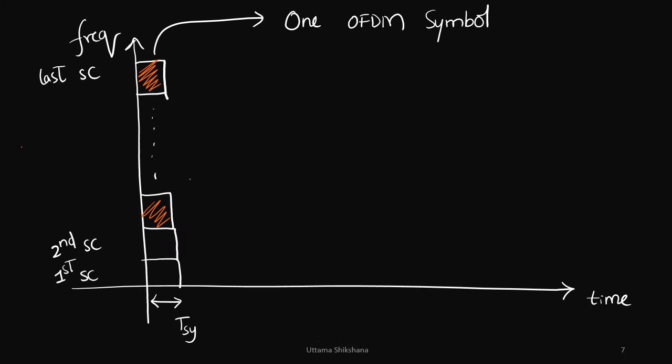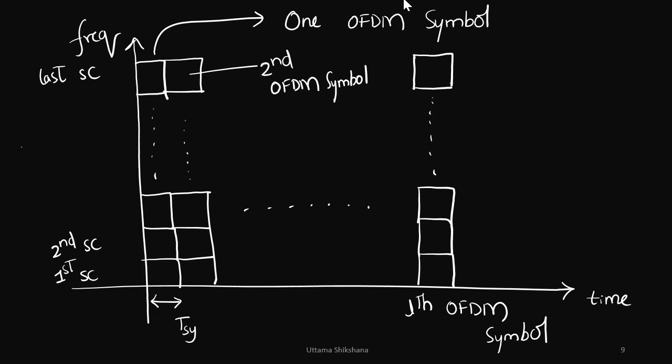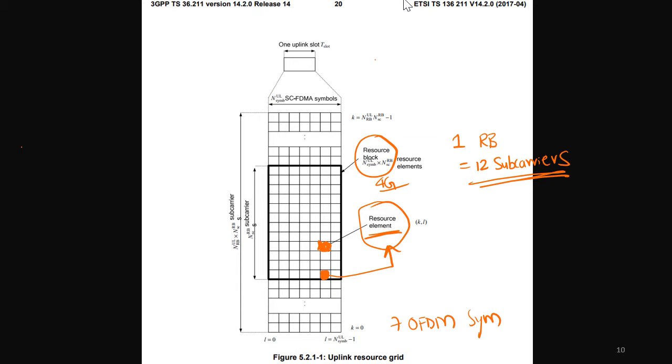So I want to just write it in a different way in a rectangular box as per 3GPP. So this is corresponding to one OFDM symbol, like that the second OFDM symbol and last OFDM symbol are stacked like this.